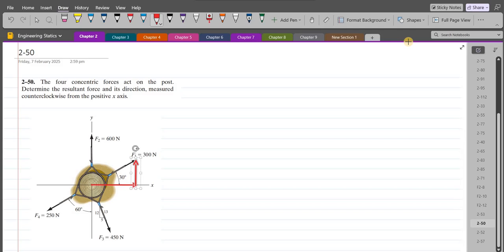For F2 force, we have a single component directed in the positive y-axis, so we don't have to resolve it. For F3 force, we have a vertical component and a horizontal component. For F4 force, we have a horizontal component and a vertical component.